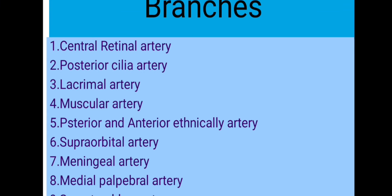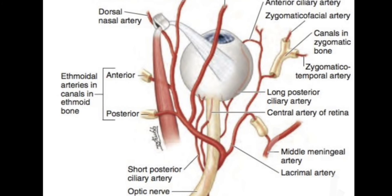The central retinal artery is the first branch of the ophthalmic artery. Its course is: it runs below the optic nerve, around 1.25 centimeters behind the eyeball, then pierces the dural sheath and arachnoid sheath of the optic nerve, and enters the eyeball through the lamina cribrosa. It supplies the inner layers of the retina.